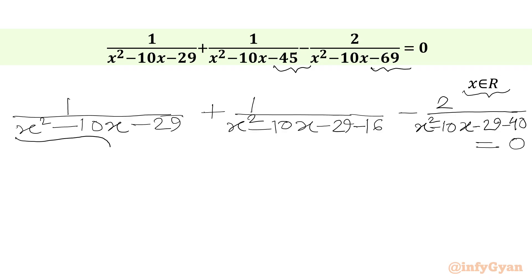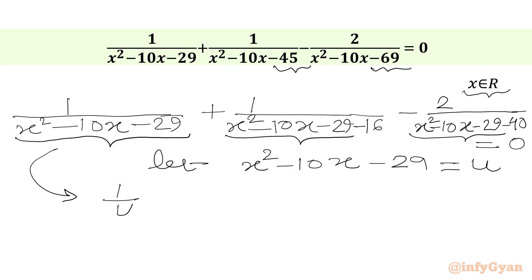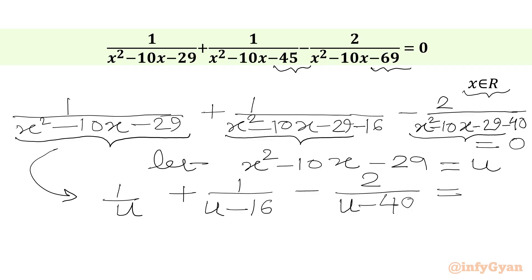Now we have x² - 10x - 29 in each of the denominators, so it is better to assume x² - 10x - 29 equals u. We will write our equation in u: 1 over u plus 1 over (u - 16) minus 2 over (u - 40) equals 0.